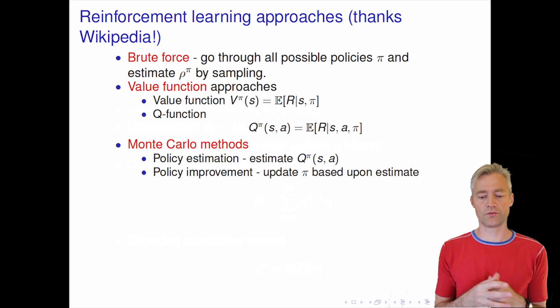You have a policy estimation. So you have some function where you estimate the Q-function and then you change your policy based on this estimate.